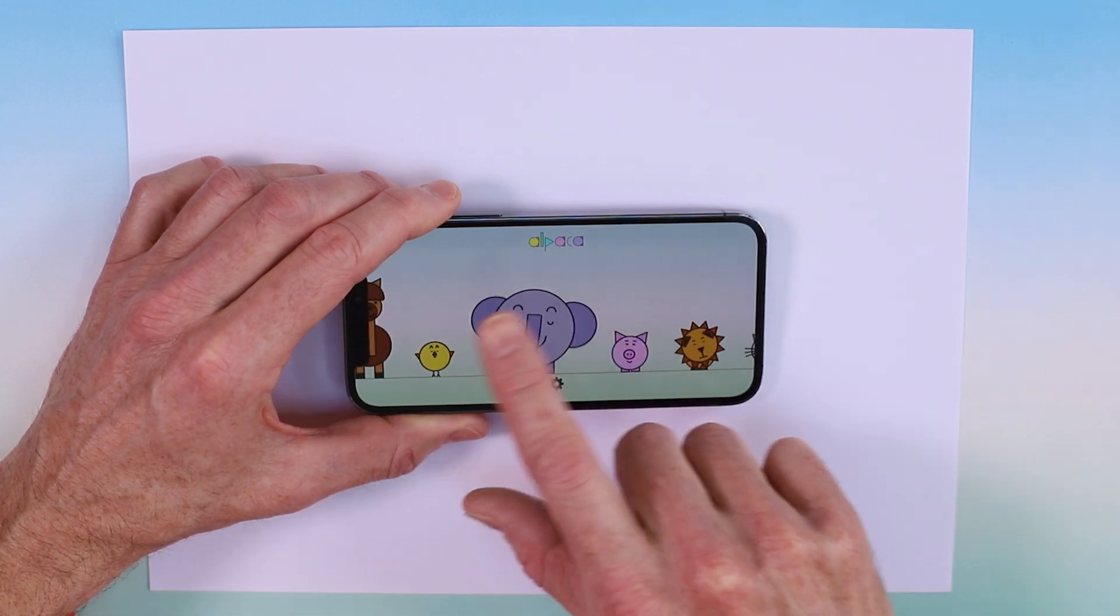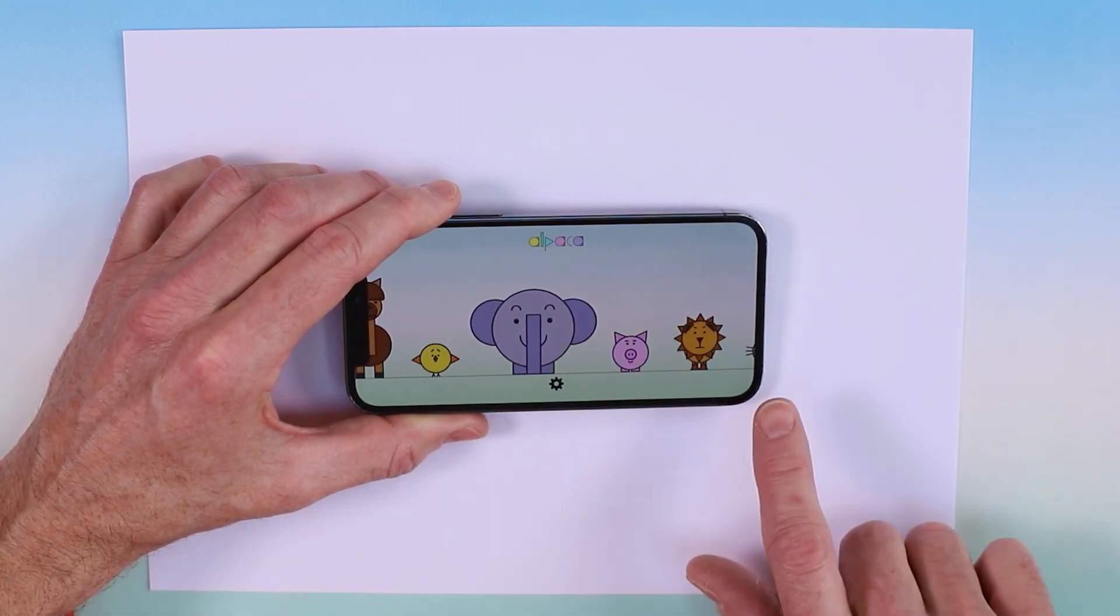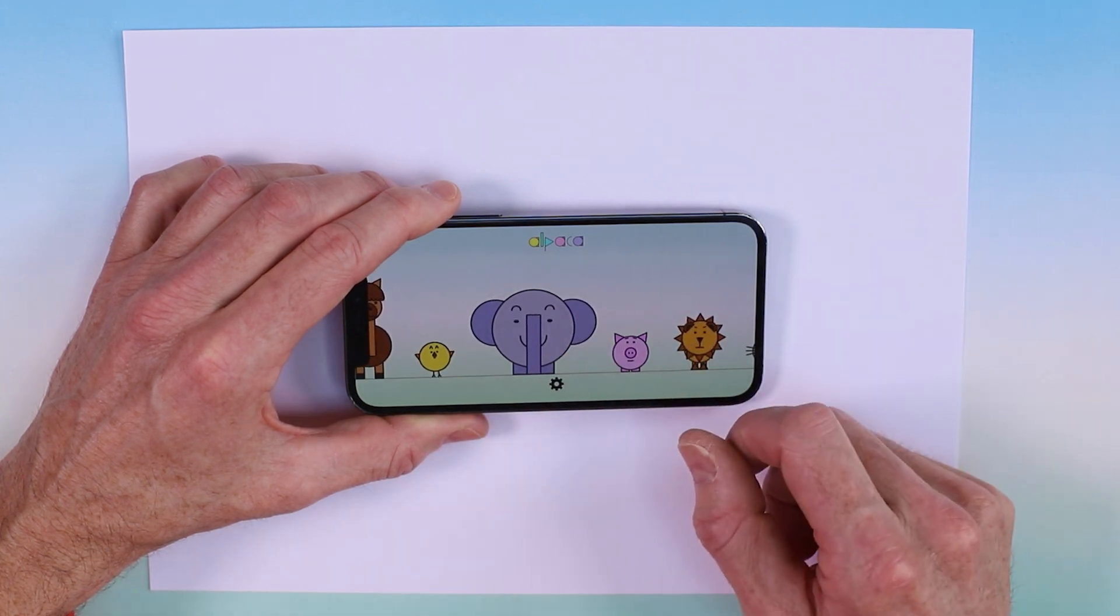One big circle, two smaller circles, a few other shapes and bingo, you've got yourself an elephant. Super fast, super easy.